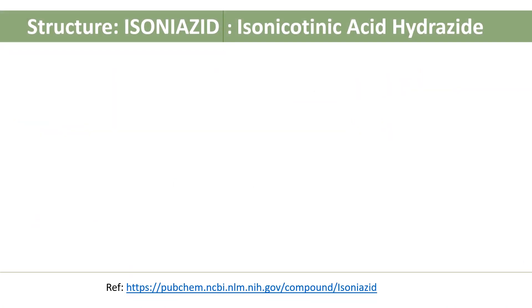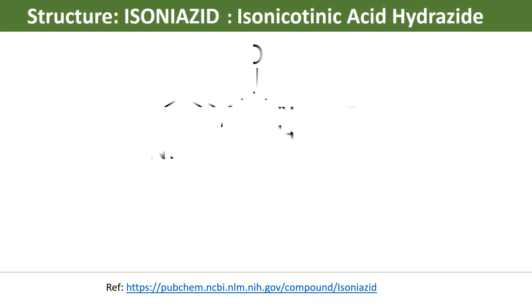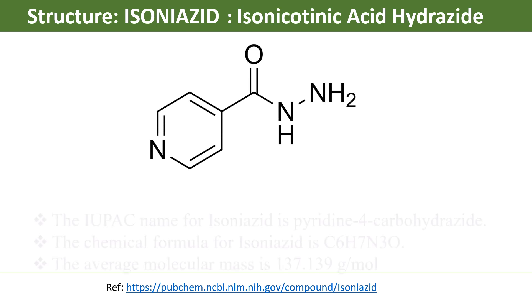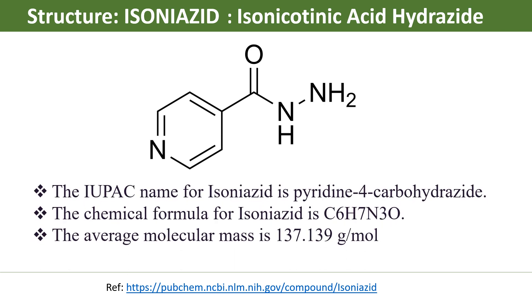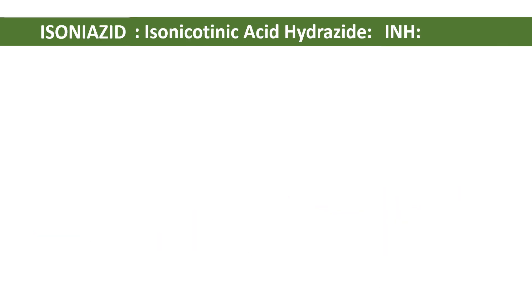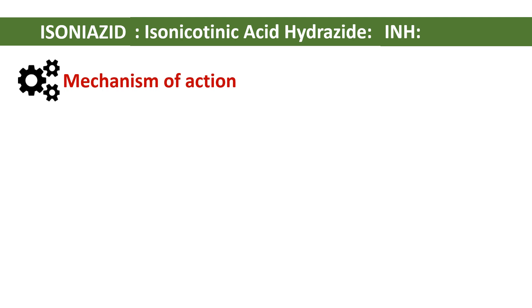Now we will see the structure of isoniazid. The IUPAC name of INH is pyridine-4-carbohydrazide. The chemical formula is C6H7N3O, and this is the molecular mass of isoniazid. Let us understand the mechanism of action of isoniazid.